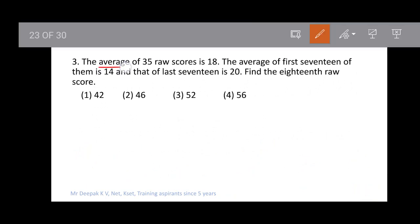The average of 35 raw scores is 18. We can calculate the sum: sum = average × n. So the sum of 35 scores is 35×18 = 630.